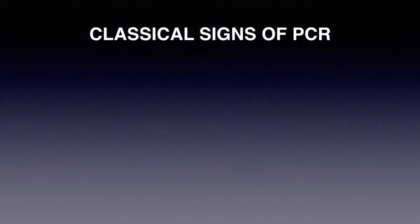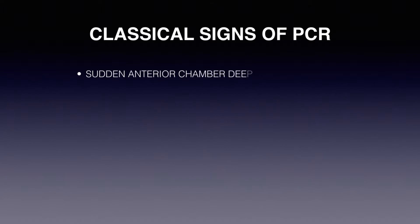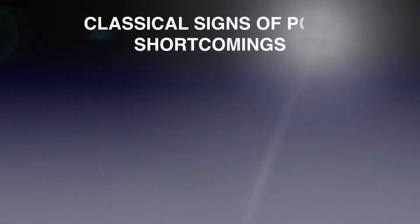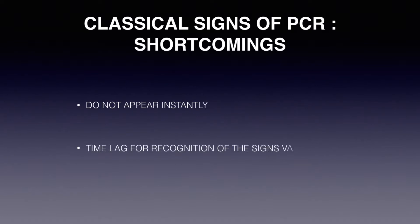The classical signs of posterior capsule rupture are sudden anterior chamber deepening, pupil snap sign, sudden increased fundal glow, reduced followability, nucleus tilt, and nucleus drop. The shortcomings of these signs are that they do not appear instantly, and the time lag for recognition varies according to the expertise of the surgeon.